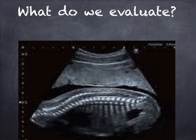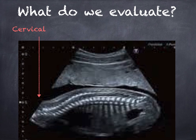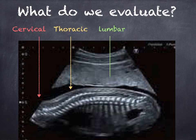Now that we're familiar with the scanning planes, we need to document the four segments of the fetal spine. We're looking for the cervical, which is right at the neck. Below that is the thoracic segment. Continuing down we have the lumbar segment, and at the end of the spine is the sacral segment.